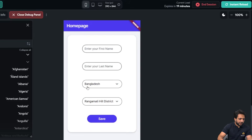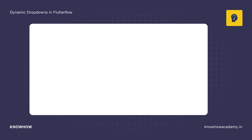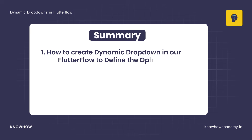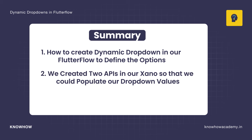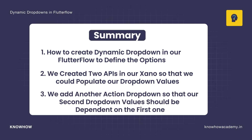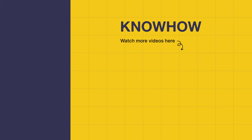In this video we learned how to create dynamic drop downs in FlutterFlow. To define the options we created two APIs in Zeno to populate our drop down values, and we added an action on the first drop down so that the second drop down's values are dependent on the first one. Thank you for choosing KnowHow Academy as your IT source — stay curious and keep learning.